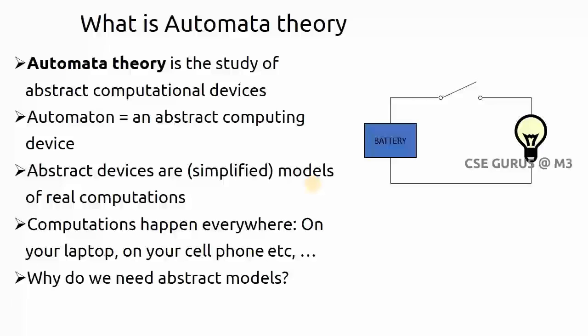Abstract devices are models of real-world computations, which happen on your laptop, cell phone, etc. We need abstract models because of computability and complexity. Computability means the ability to compute — for a particular problem, whether you can solve it using a device or machine. For example, to find the speed of a vehicle you need distance and time; if only distance is given, you cannot compute speed. Some problems may not be solvable even with all requirements. This is called computability, or decidability and undecidability.